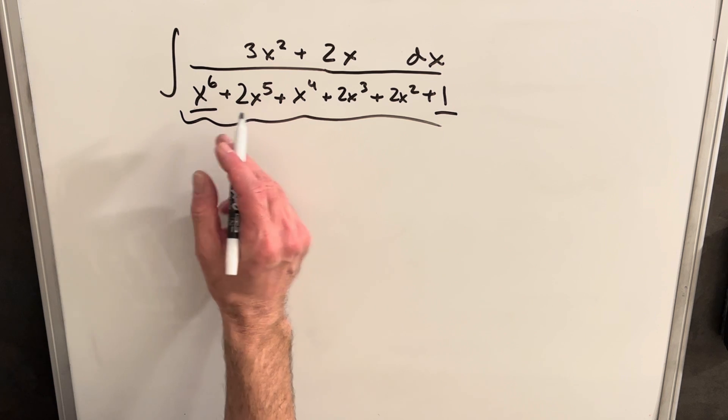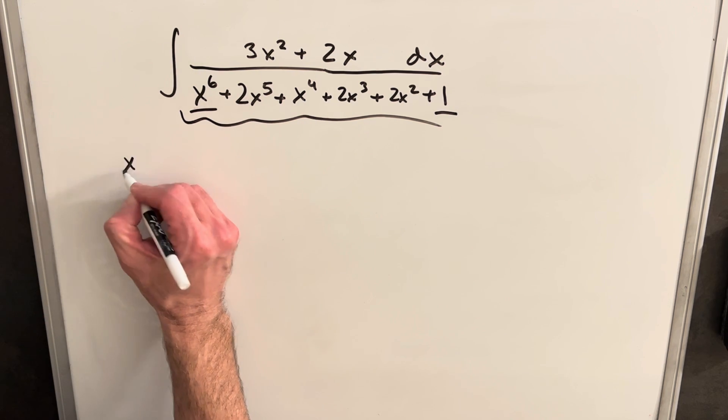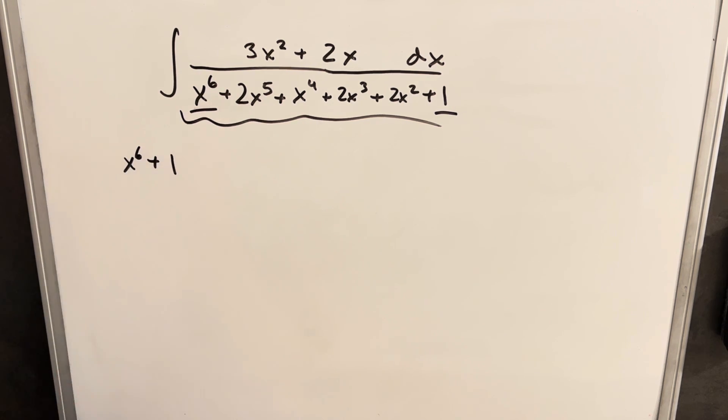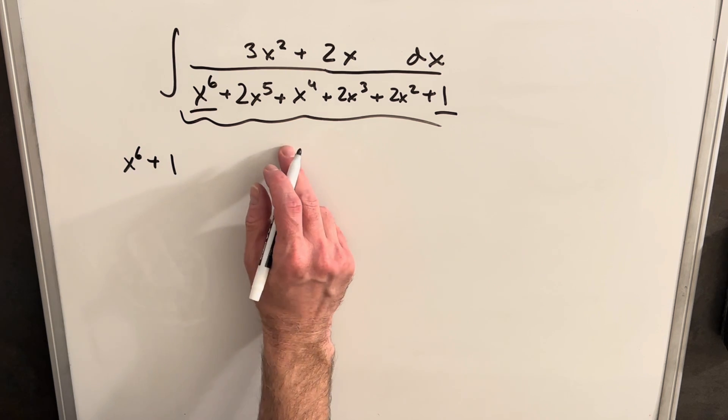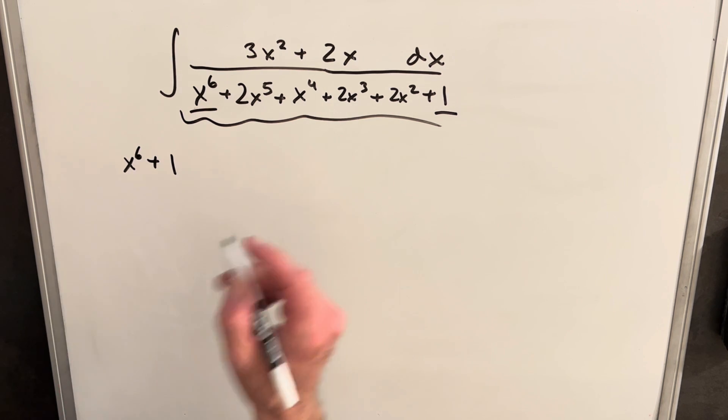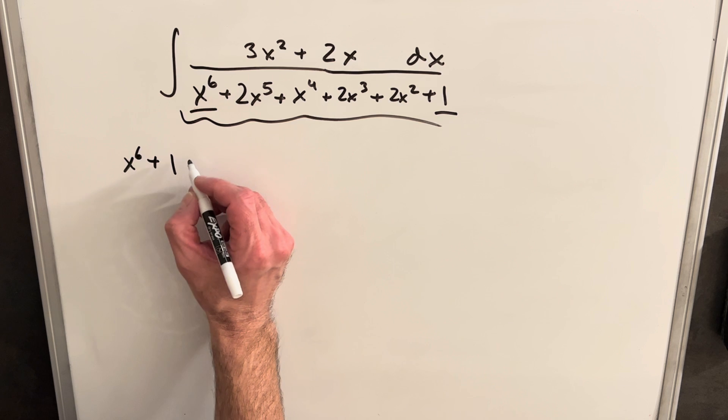So let's break that out separately. I'm going to just rearrange it a little bit. I'm going to group my x to the 6 with the 1, and I'm going to put everything else to the side for the second. Let's actually just look at this x to the 6 plus 1.